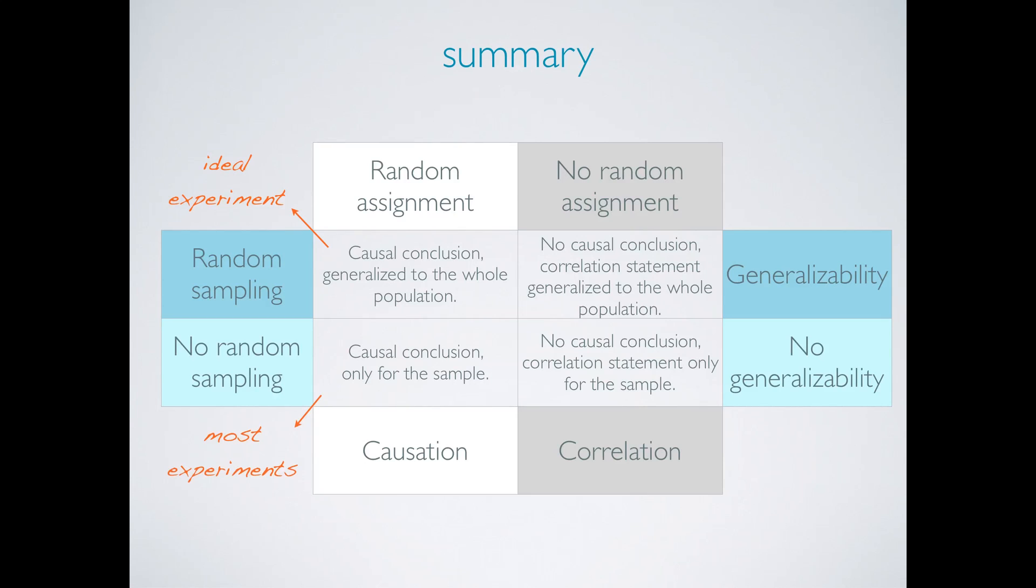Most human experiments actually rely on volunteers. Such a study that employs random assignment but not random sampling can be used to make causal conclusions, but these conclusions only apply to the sample and the results cannot be generalized.